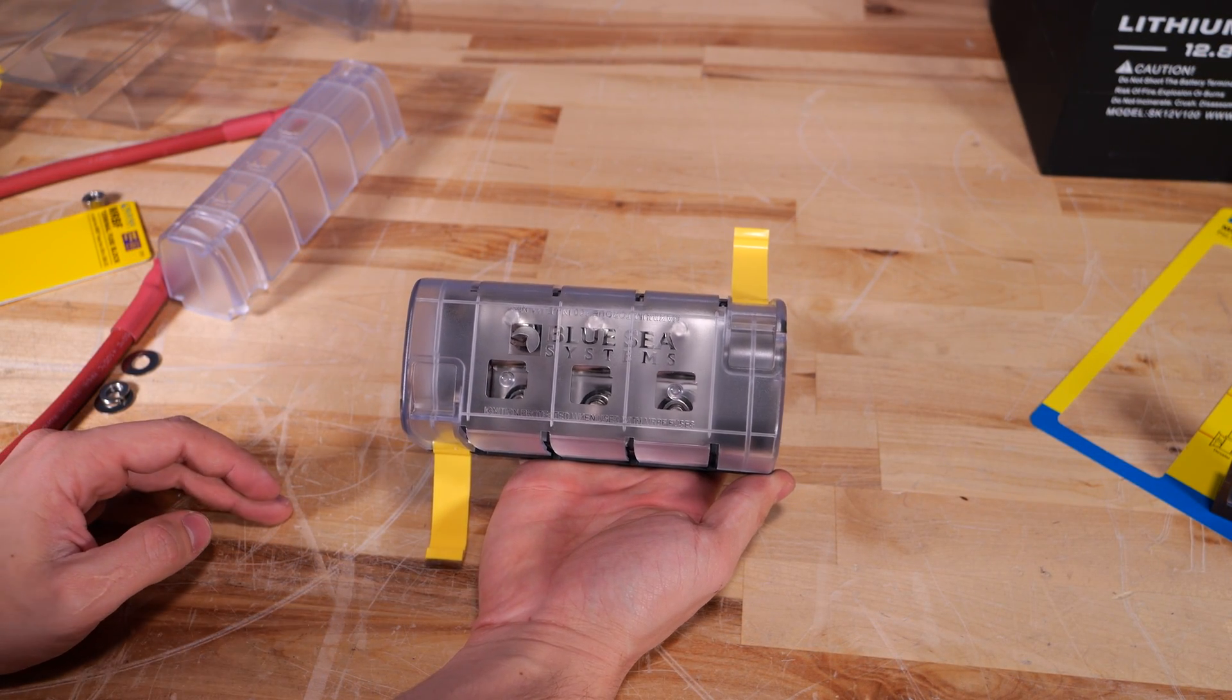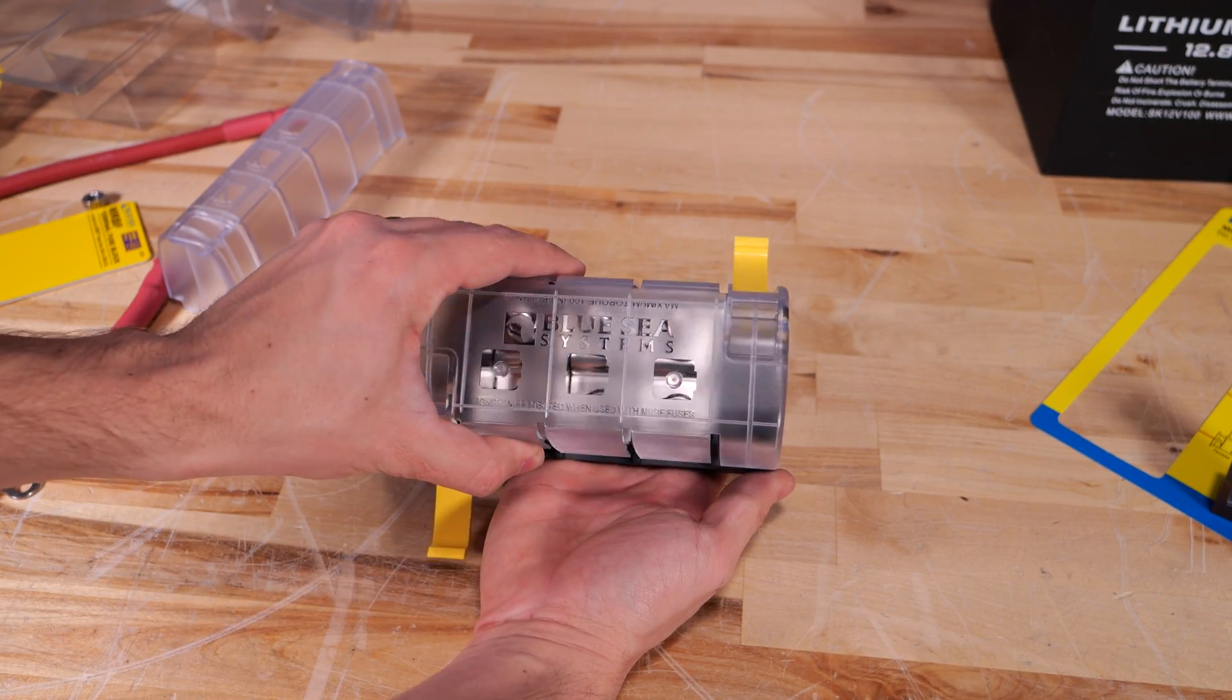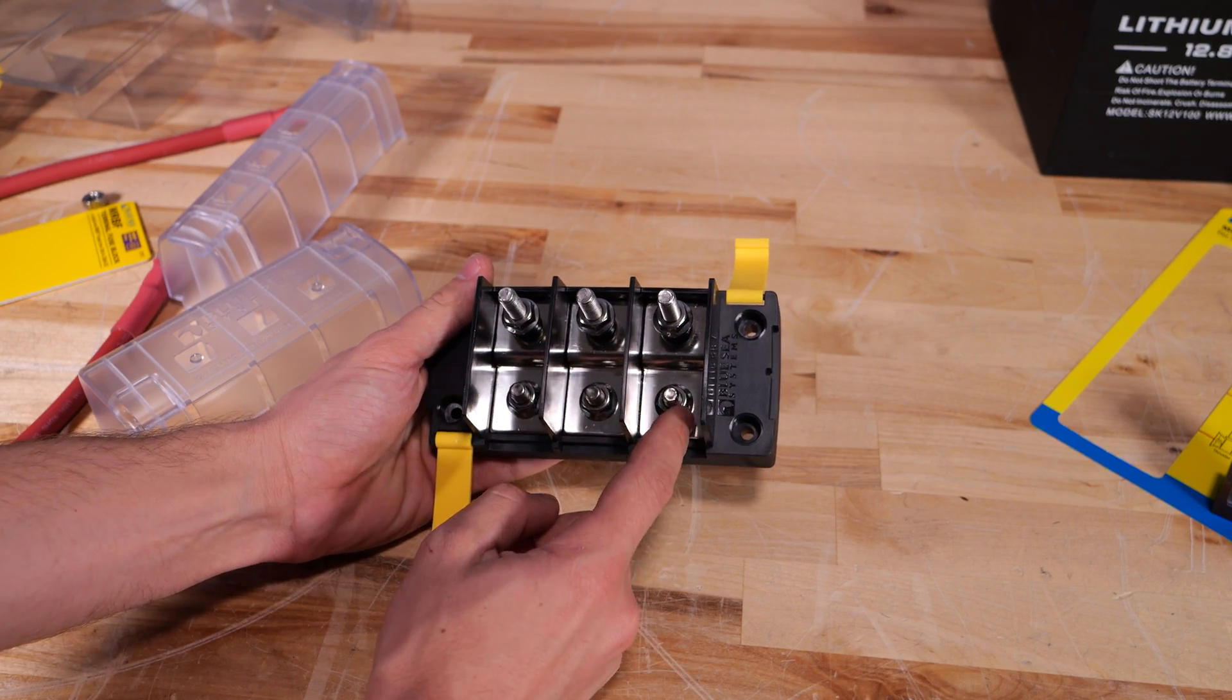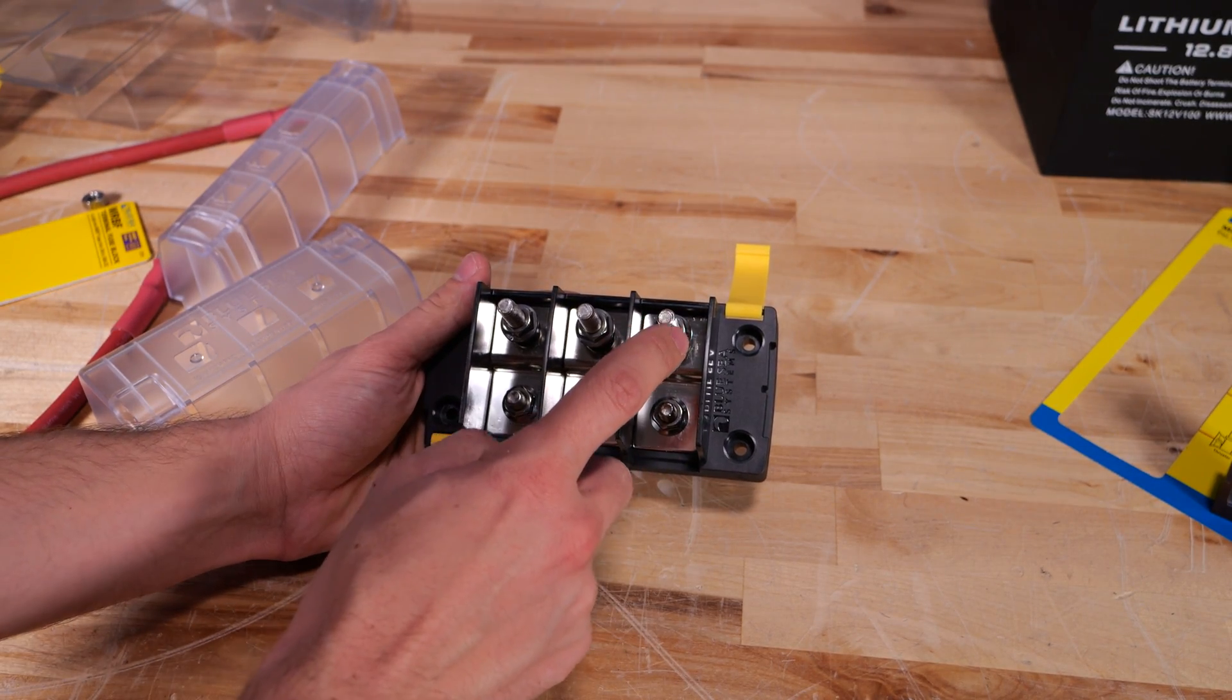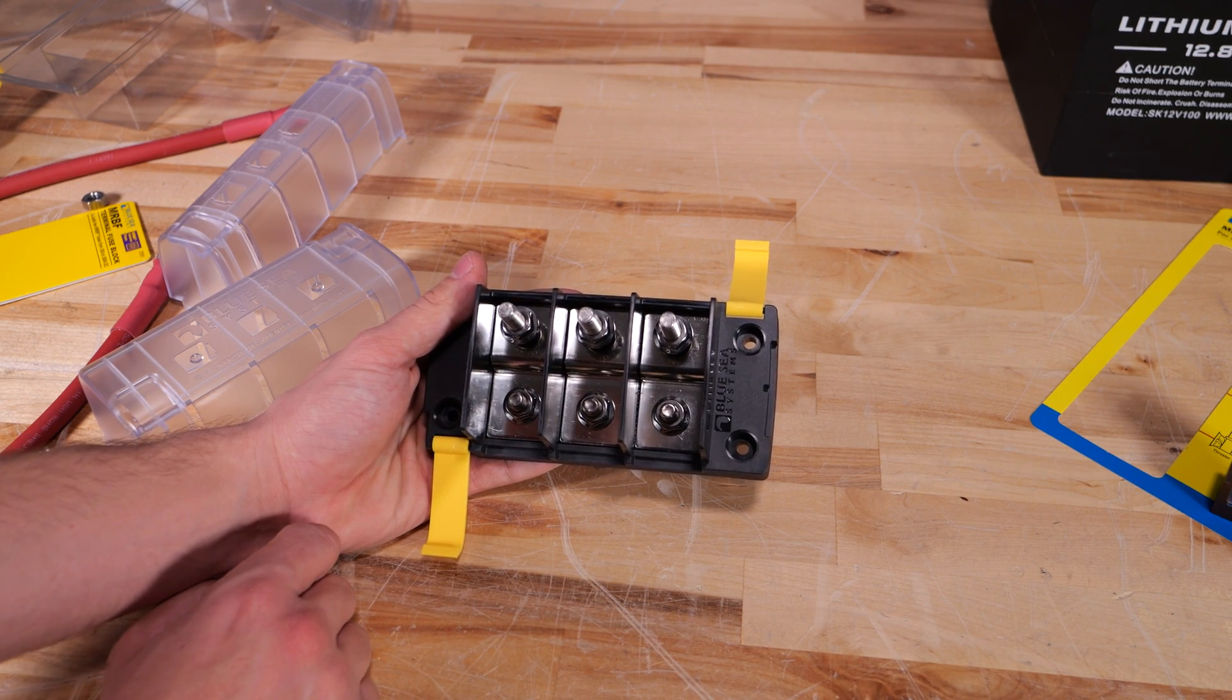Finally our last option, this is model 5194, this is an independent fuse block. It has the same polycarbonate cover except in this case these are not all tied together so you can have totally separated inputs versus outputs for each of the three fuses.